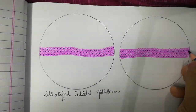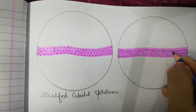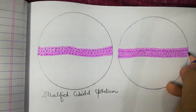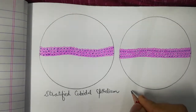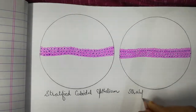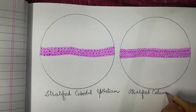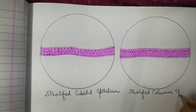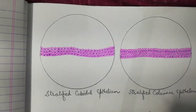Now we have to label this epithelium as stratified columnar epithelium. These two types of epithelium are present only in the ducts of different types of endocrine and exocrine glands. Thank you.